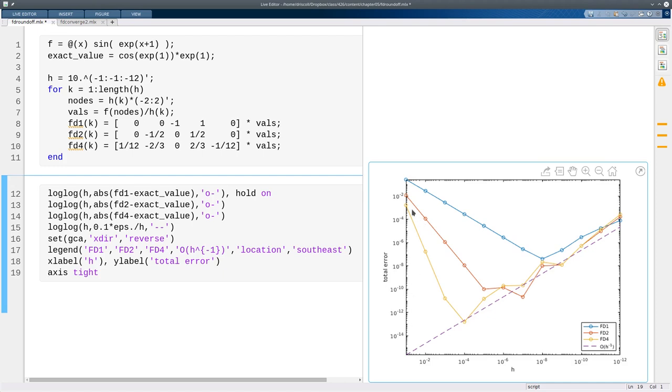So not only do the higher order methods converge faster, but they get down lower before they hit this rising roundoff error curve.